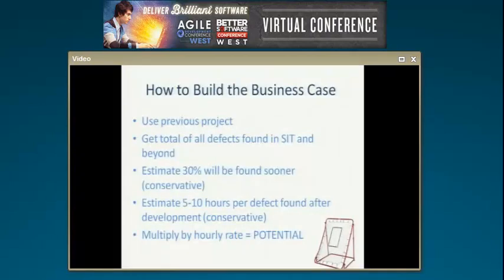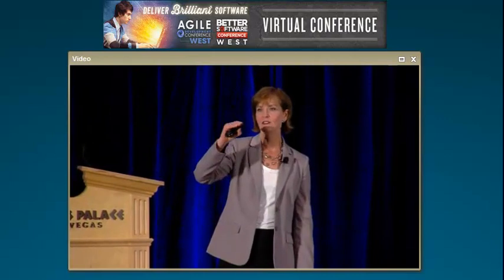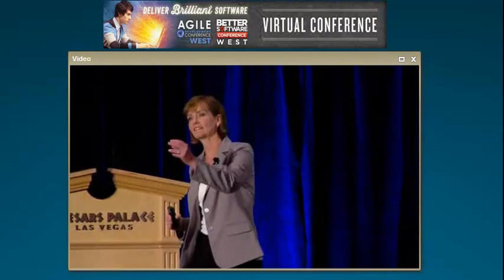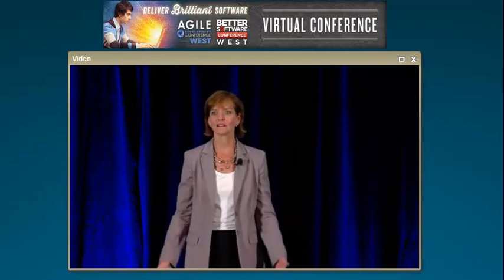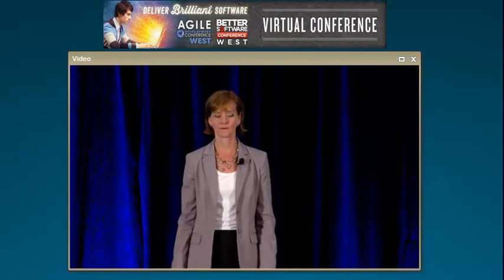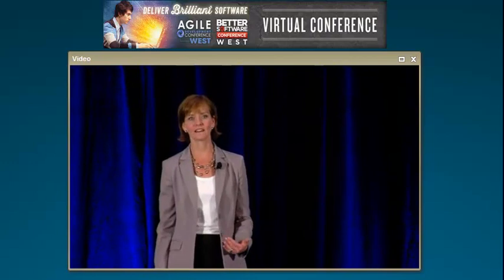Everyone signed up for it. Here's exactly the formula you need to build the business case: get defect data from a previous project, pull the numbers from SIT and later cycles — that's when you start the counter, at integration. Take a previous project of similar size and complexity, say integration defects will be reduced by 30%, and use five to ten hours per defect based on your own numbers. Go conservative and sign up. Say we have a potential savings of $60,000. It's hard dollars, real math based on facts and data.